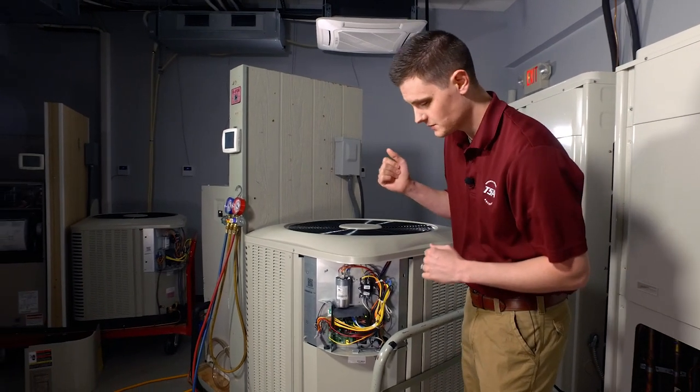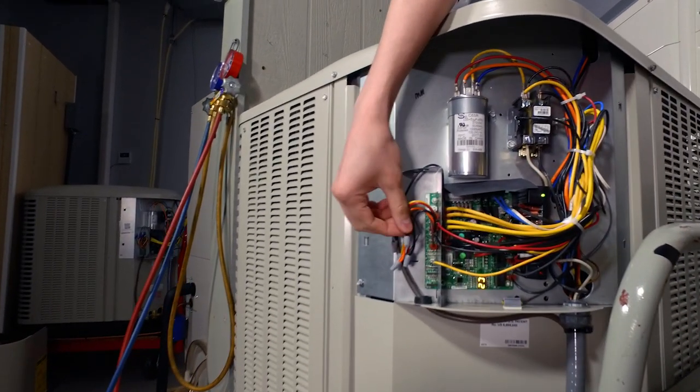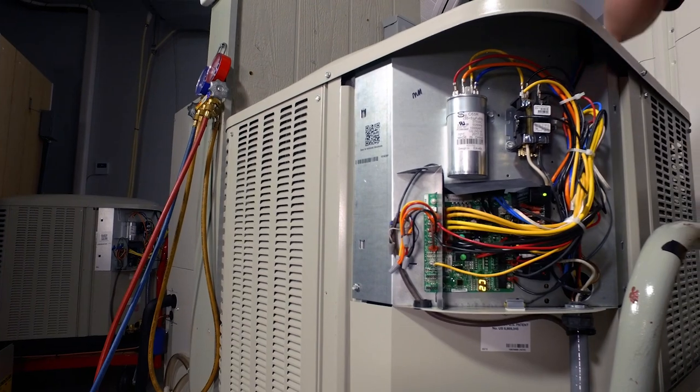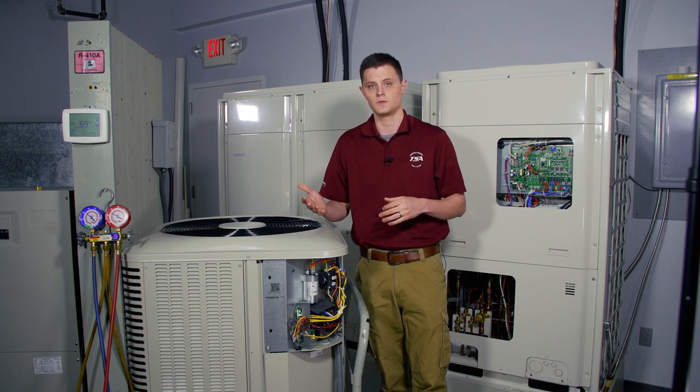Also on the defrost board, with the thermostat wiring off to the left, with a two-stage piece of equipment, you will have a wire for Y2. The Y2 wire will essentially control whether you're at first stage capacity or if you bump up to 100% capacity, which will be second stage.